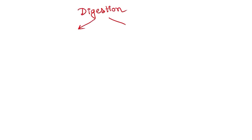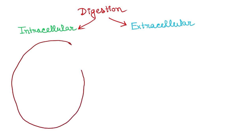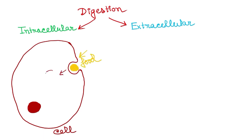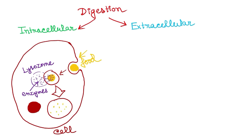Digestion can be of two types: intracellular digestion and extracellular digestion. Intracellular digestion means the digestion happens inside the cell. In intracellular digestion, the cell engulfs the food and the lysosome inside the cell releases enzymes on the food, breaking it down into smaller molecules. So digestion happens inside the cell.